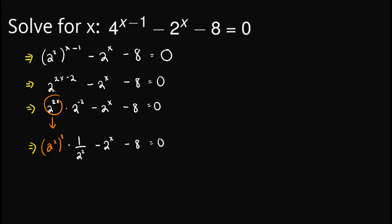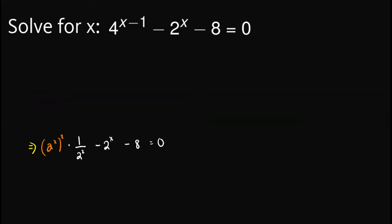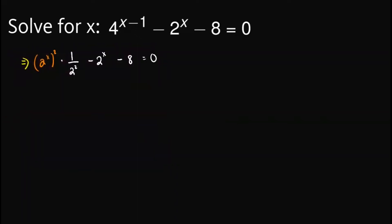So let's clear out some space first. So far, we have written the given expression into this one. Now, here comes the fun part. Observe that this one out here, 2 is 2 raised to x and this one is 2 raised to x. And this one has a square.